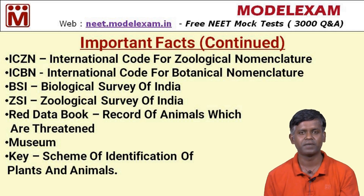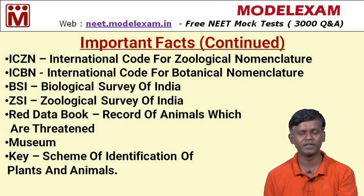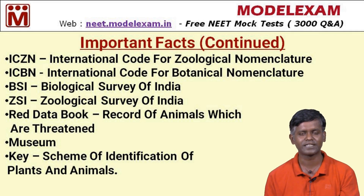These surveys pertain to the conservation of endangered or endemic species related to a specific habitat. The Red Data Book is a record that collects data to preserve and maintain endemic or endangered species of plants and animals.